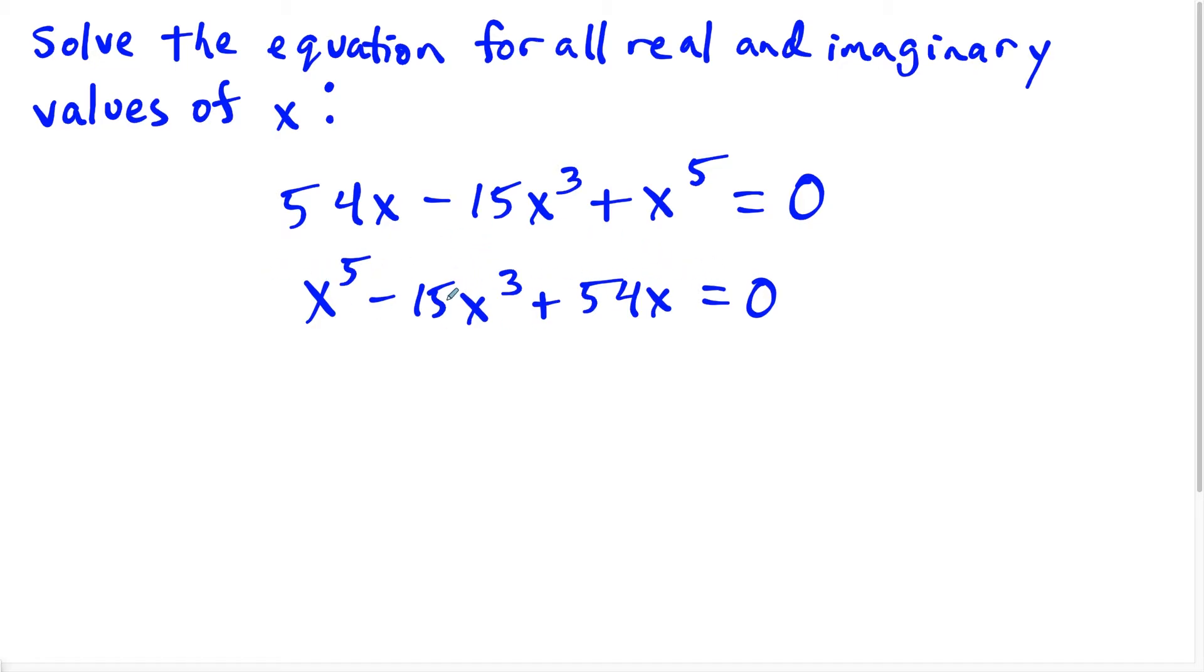And before we jump into any advanced factoring, the first factoring technique you should always try is look for a greatest common factor. And all of these terms on the left are divisible by x. So if we take out an x, x to the fifth divided by x, we're going to be left with x to the fourth. When we divide the second term by x, we'll be left with minus 15 x squared. And then the last term, if we divide by x, we'll be left with plus 54.